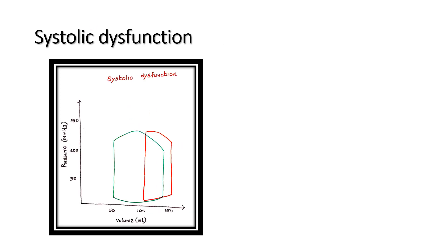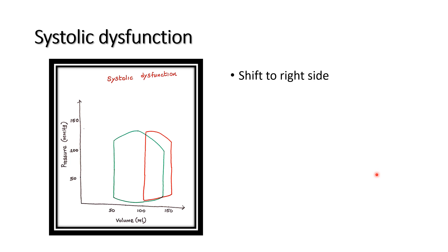In this curve, the green color represents the normal pressure-volume loop. The red color curve represents systolic dysfunction. During systolic dysfunction, the pressure-volume loop shifts to the right because the ventricle cannot contract properly and cannot pump blood adequately due to defective myocardial contractility.